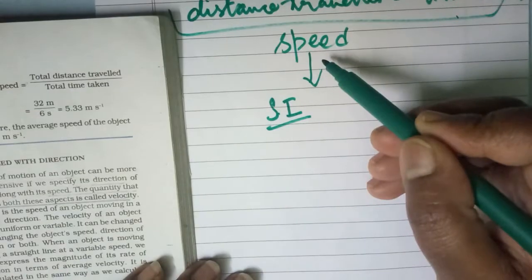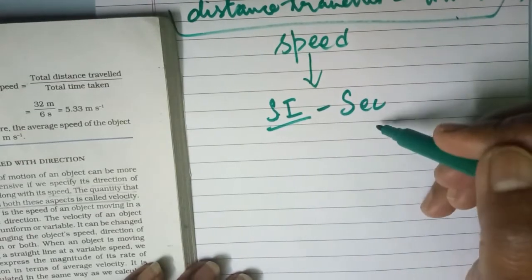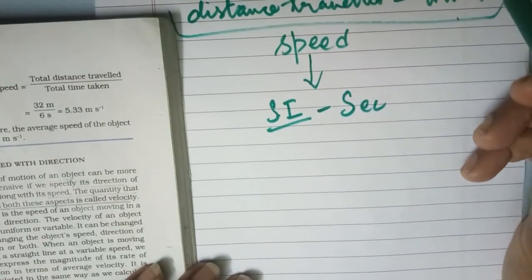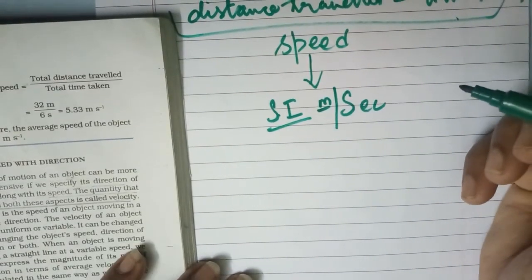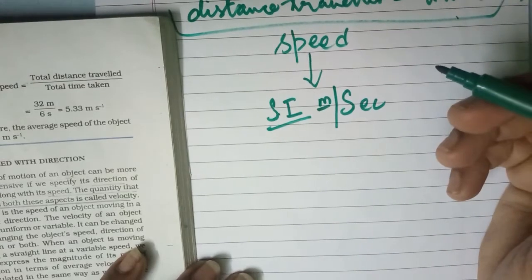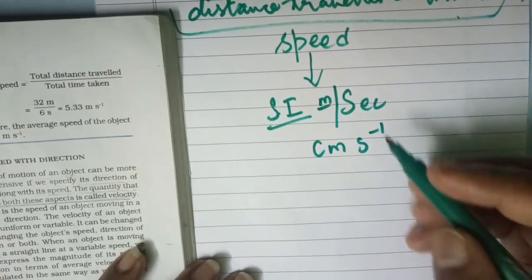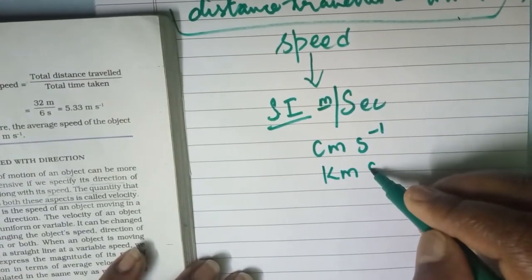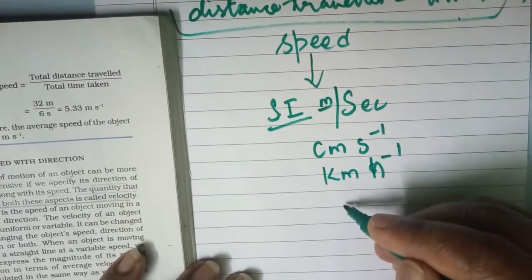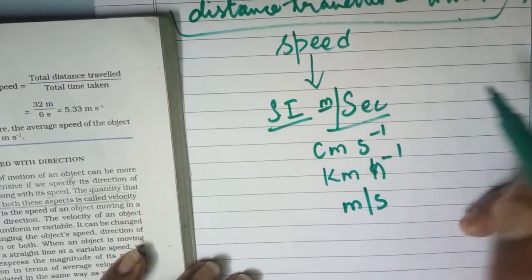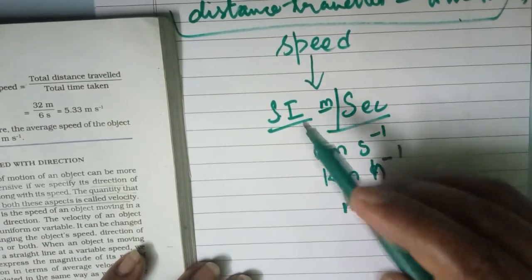The SI unit of speed involves both time and distance. It can be meter per second (m/s), or centimeter per second (cm s⁻¹), or kilometer per second (km s⁻¹), or kilometer per hour (km h⁻¹), or simply meter per second as written here. All these can be units used to represent speed.